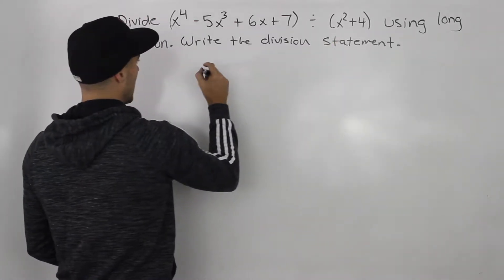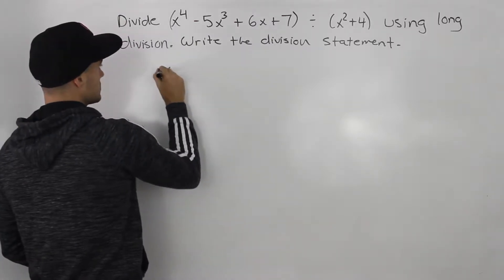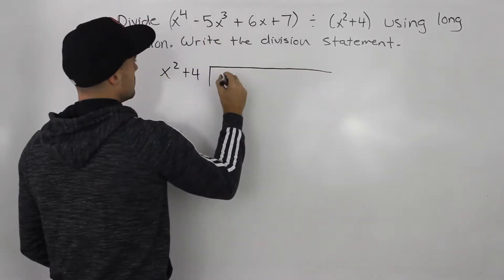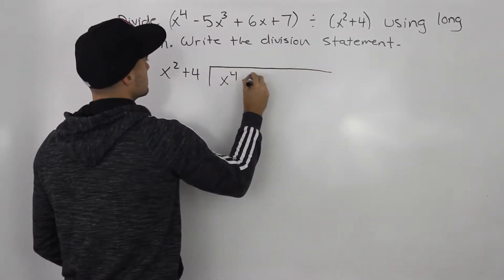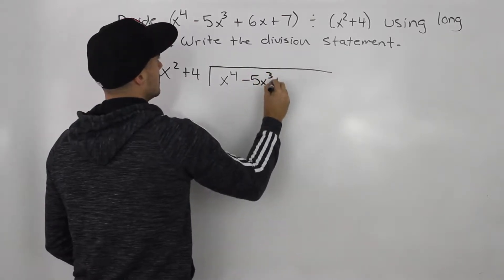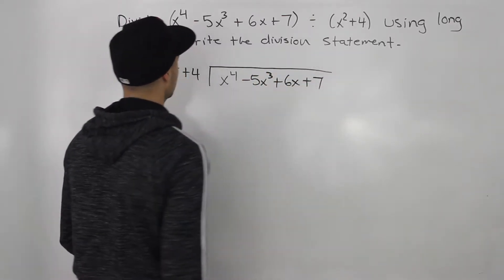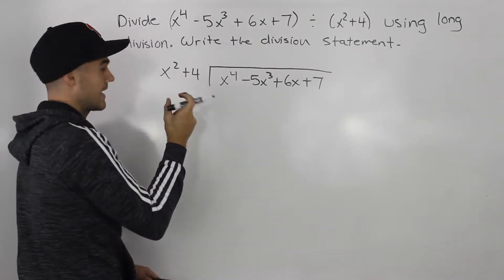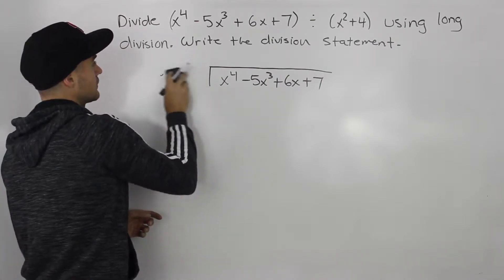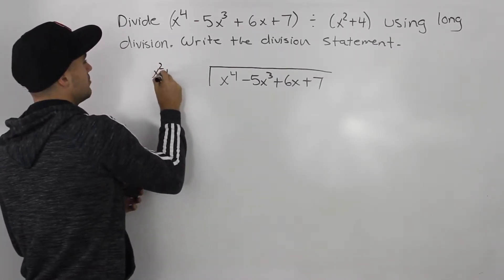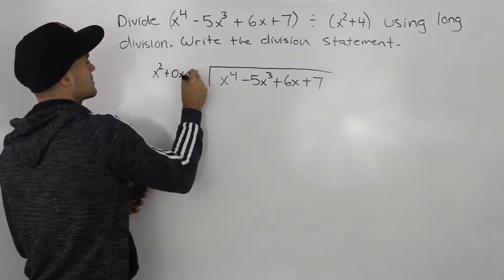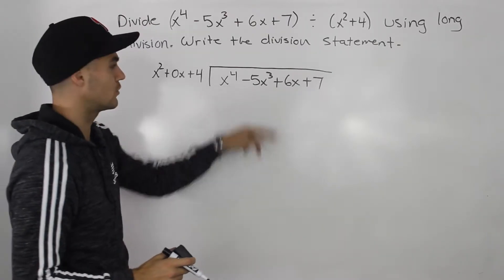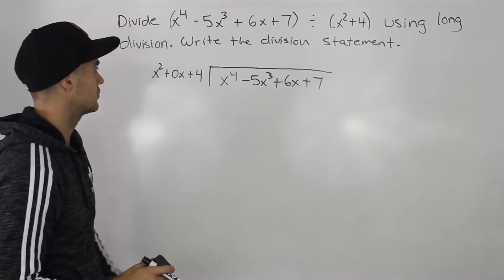So this is going to be our divisor. Let's actually do this here: x squared plus 4. We're going to divide it into this quartic function, x to the 4 minus 5x cubed plus 6x plus 7. Now notice with this divisor, there's no term that has an x, so we have to put a placeholder in there. So we put x squared plus 0x plus 4.